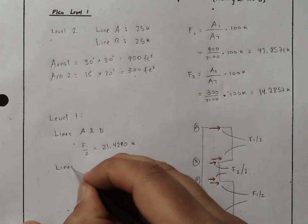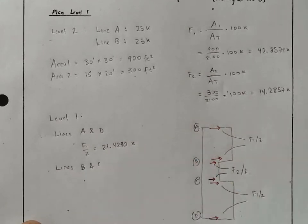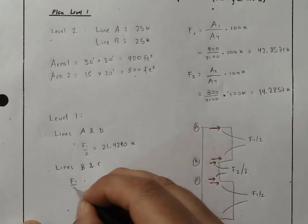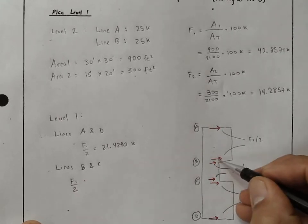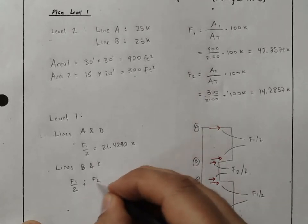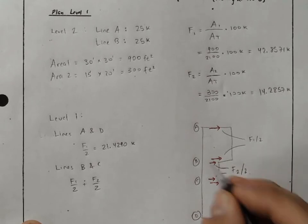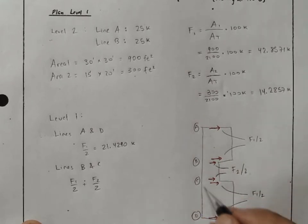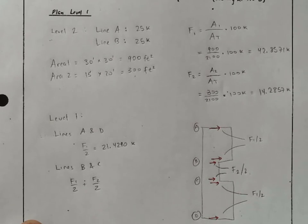I now look at lines B and C, and we have F1 over 2, that's from this force here, the upper force on line B, plus F2 over 2, that's the lower force on line B. You can see it's the same calculation down here on line C.